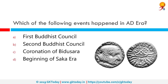Which of the following events happened in the AD era? The correct answer is the beginning of the Shaka Era. The Shaka Era is a historical calendar era corresponding to Julian year 78, commonly known in Indian languages as Shalivahana Shaka or Mahasakkarath.